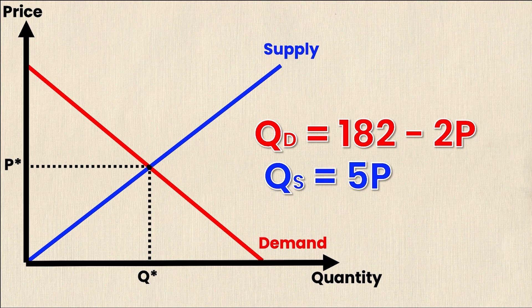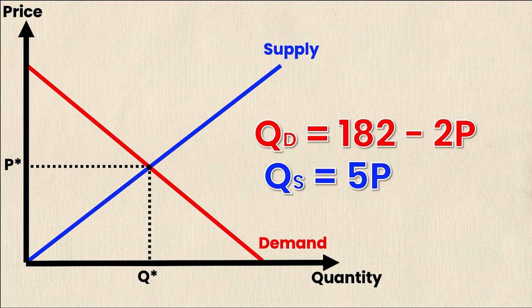So for this particular example we have a demand equation and a supply equation that look like this. So quantity demanded is equal to 182 minus 2P and quantity supplied is equal to 5P and you'll see I have them as red and blue so you can see which one is the supply and which one is the demand and your equations might look different but your steps to solve will be the exact same.